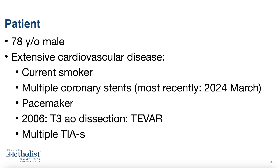We are demonstrating the case of a 78-year-old male with extensive cardiovascular disease. He is a current smoker and has received multiple coronary stents, with his most recent PCI in March of 2024. He also lives with a pacemaker. In 2006, he suffered a Stanford type III aortic dissection involving the descending thoracic aorta, for which he underwent a TBER procedure.